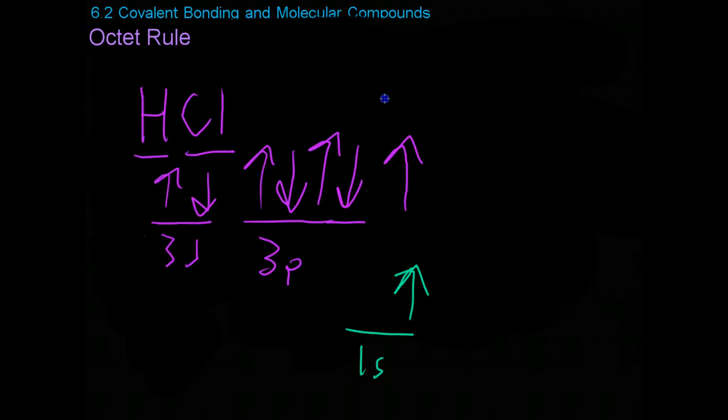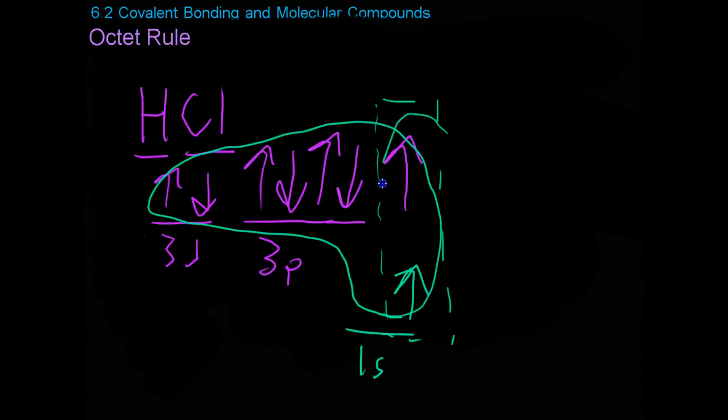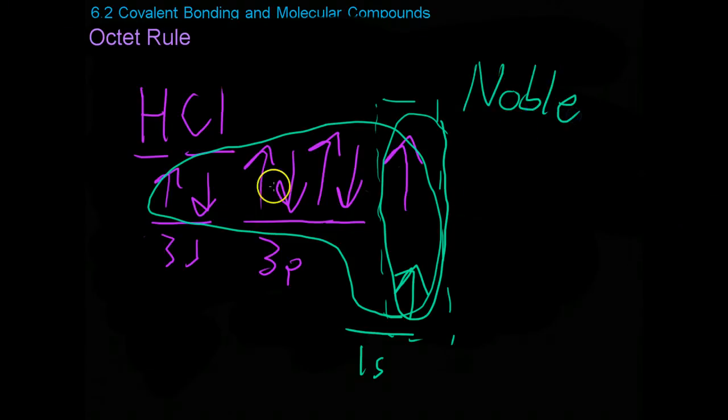If these two share this electron, you'll see that chlorine will then have eight total electrons in this shared orbital, and hydrogen will have two. This gives chlorine the arrangement of argon, and hydrogen the arrangement of helium, both of which are noble gases, and it gives chlorine this octet rule. Hydrogen doesn't follow it because it can't have a p orbital, but it does still form a stable noble gas configuration.